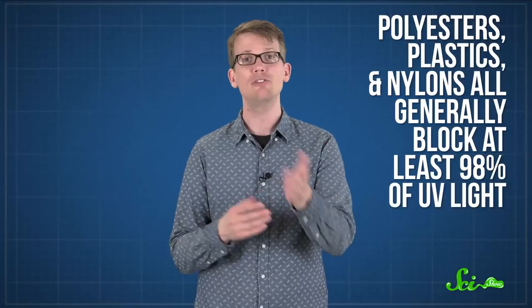And generally, most fabrics made with shiny, synthetic, or tightly woven fibers provide lots of UV protection. Polyesters, plastics, and nylons all generally block at least 98% of UV light, which makes them at least as good as SPF 50 sunscreen.